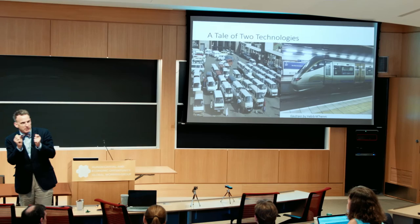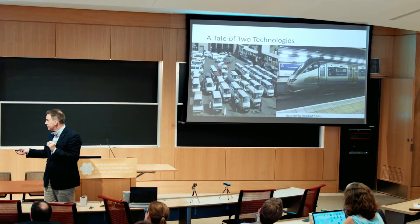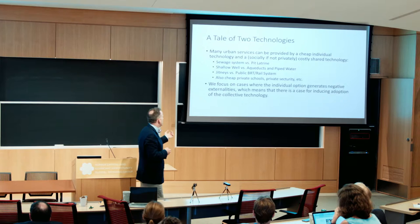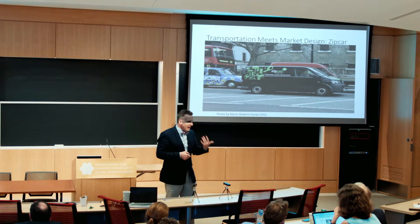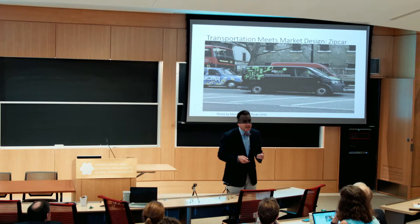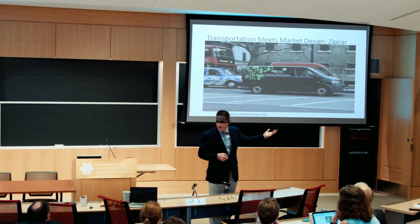The issue of sewers versus shallow wells, pit latrines versus sewers, comes up over and over again in the developing world context — it's a world of multiple technologies. There are, in so many cases, a cheap technology and an expensive one. The cheap technology for moving around is minibuses, jitneys, jeepneys in Manila; the expensive one is a sleek rail system. We have sewage versus pit latrines, shallow wells versus aqueducts, jitneys versus public BRT. The question economists must grapple with is: when is the right answer to push everyone from the old technology to the new, as with pit latrines in dense areas, and when is the right answer to upgrade the minivans rather than spend billions on a train system?